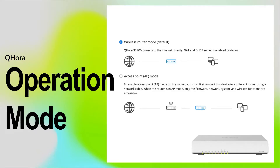In QHORA, we have two kinds of operation mode. By default, the QHORA is in routing mode, where QHORA has NAT and DHCP server enabled on the LAN side. In AP mode, it is like a wireless bridge network, where it gets its IP from the DHCP server or router in front of the QHORA, and its purpose is to provide wireless connection to the wireless clients.